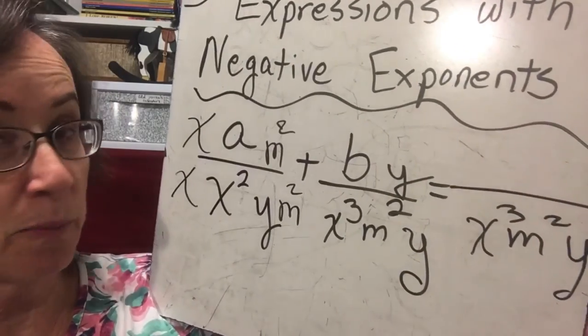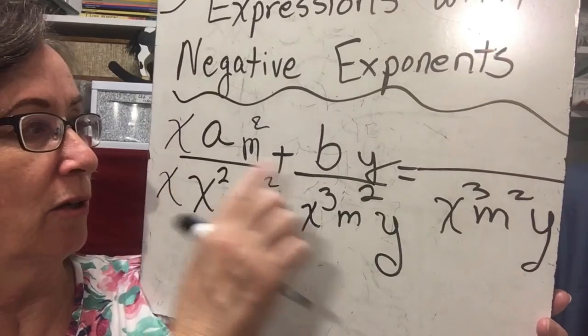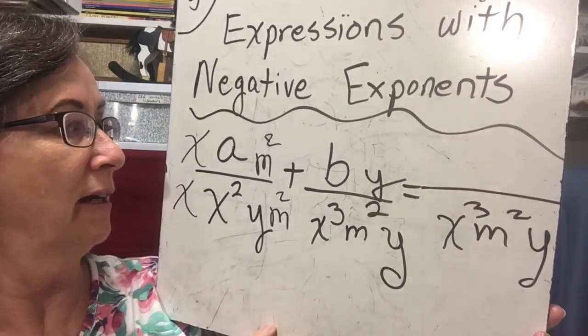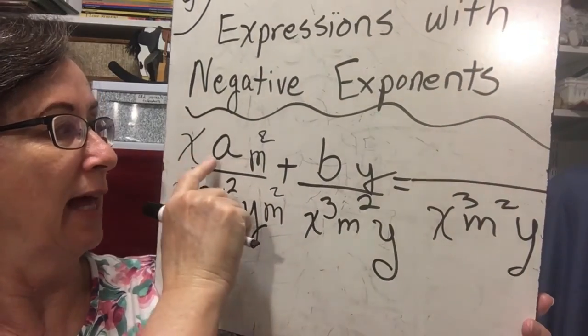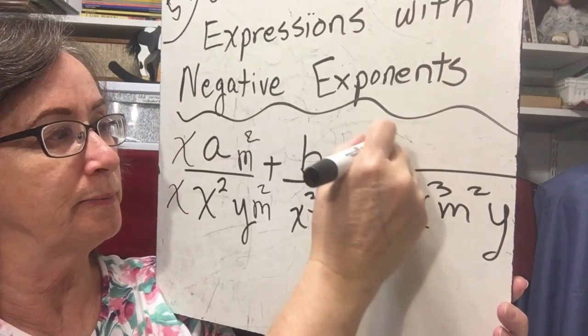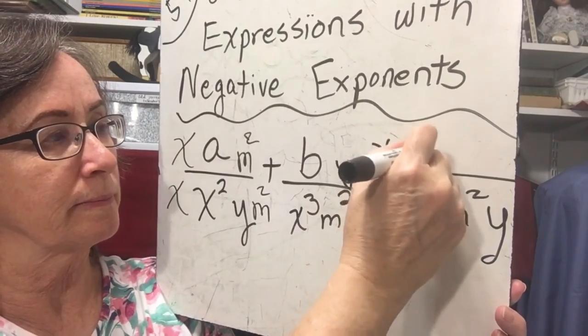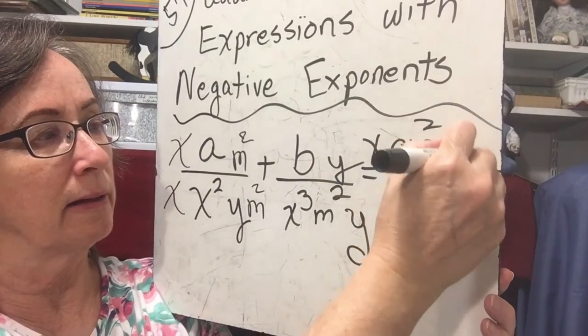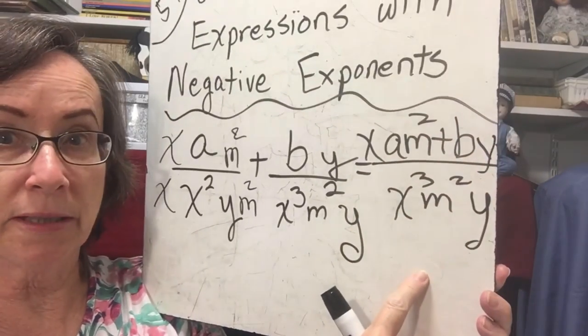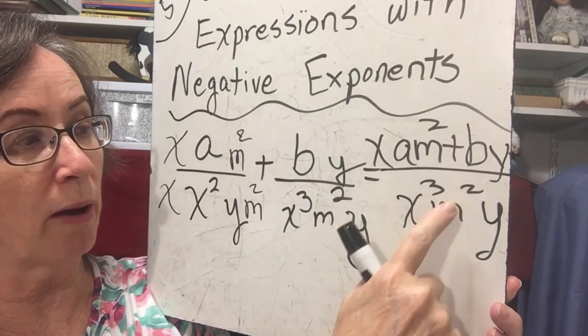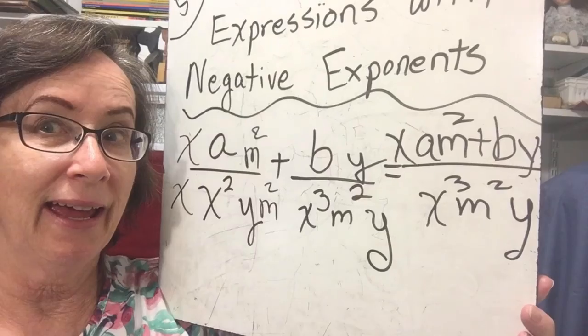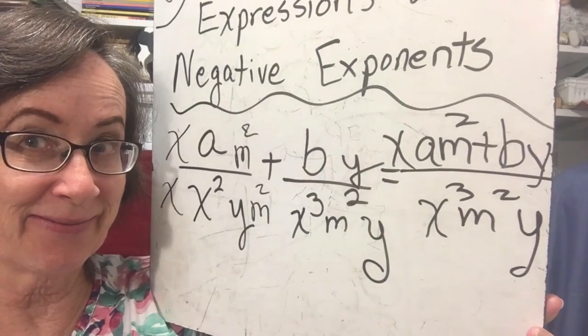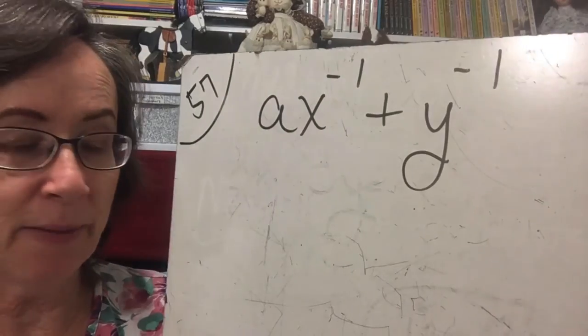Now the expression that we get when we add these two fractions that have the same denominator together is x a m squared plus b y over the common denominator and that's what we're going to be doing in this lesson. Okay, so example here.